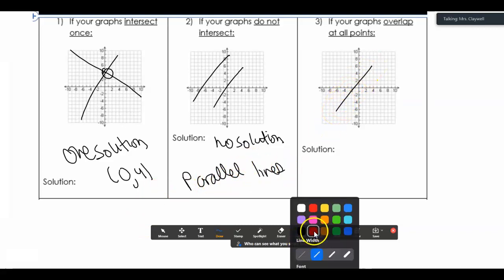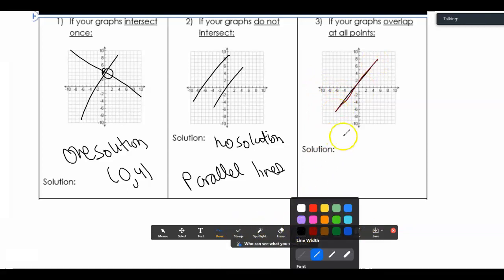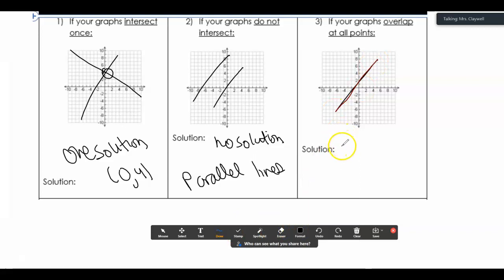If they overlap and are the same lines, so I'm going to try to draw two on top of each other, it may be hard for me. Then we say that there's infinitely many solutions, or we can use the infinity symbol.